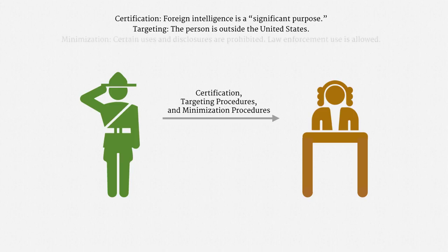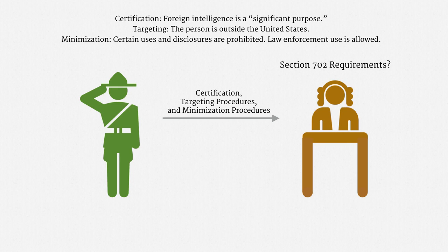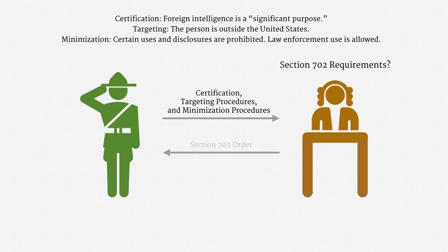The filing also has to include some minimization procedures. These aren't minimization of collection procedures — they're minimization of use and disclosure. They're very different from the minimization procedures that we've seen under the Wiretap Act. And critically, they allow for law enforcement use of collected information. That entire bundle of paperwork gets filed with the FISA court. A judge then thinks through whether the certification and procedures are statutorily sufficient. The judge can request changes, and that has happened.